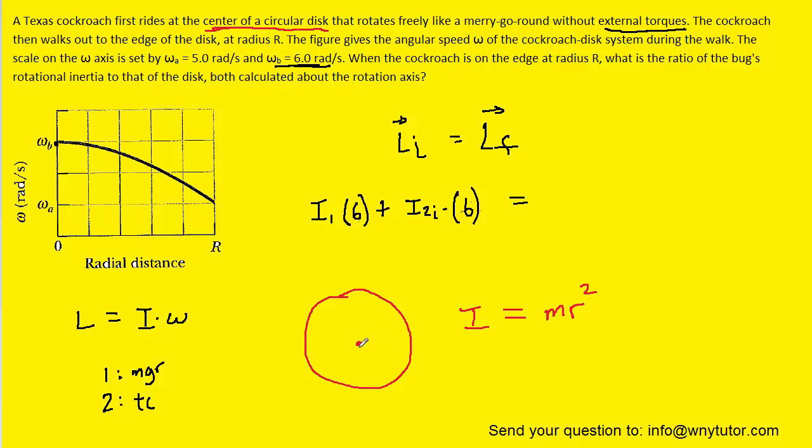But if the cockroach starts at the center, then its distance to the center would be 0. So that means that the initial rotational inertia of the Texas cockroach is 0. If we plug 0 in for that rotational inertia, that's going to eliminate this term altogether. So we can actually simplify the left-hand side of this equation.